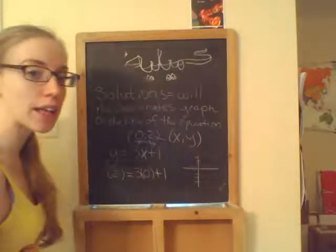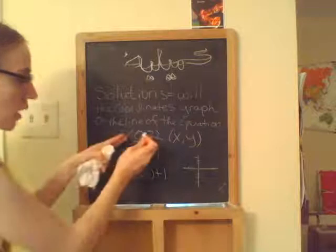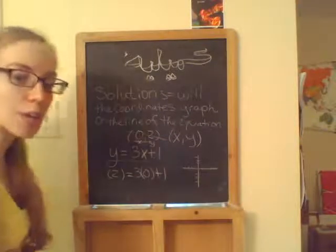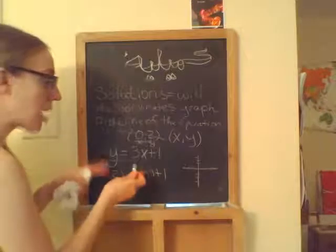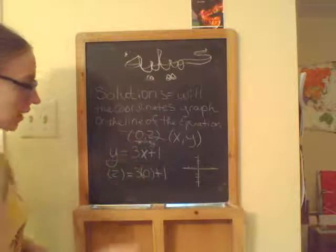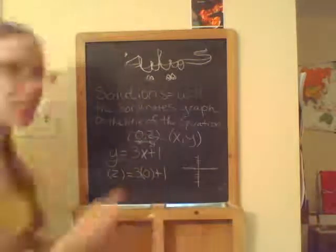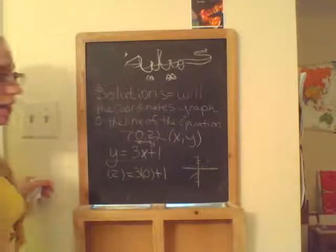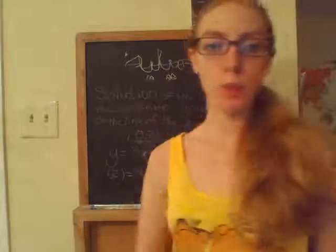Now that we understand that concept of seeing if an ordered pair will be a solution for a linear equation, I'm going to go in depth on how to actually find points that we can put in. Sorry, I'm losing my voice today. I talked a lot. We'll see if we can solve them on the line there. I'm going to go ahead next and skip into more details. Thank you.